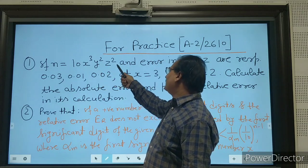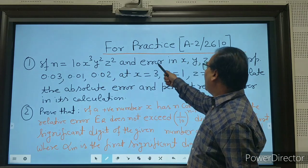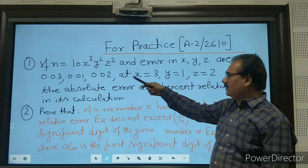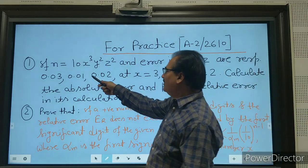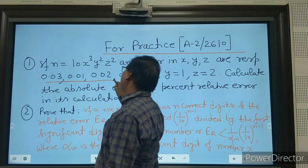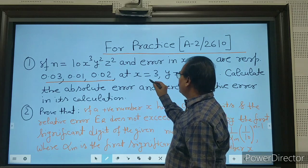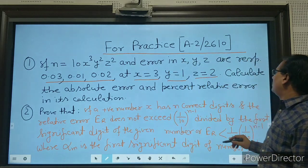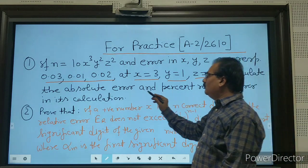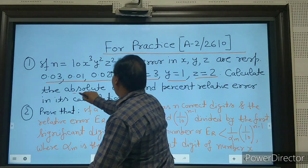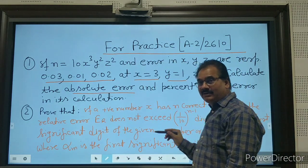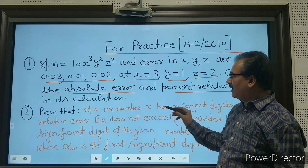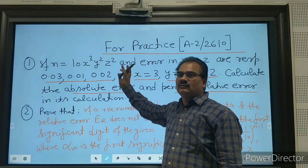For practice: if u = 10x³y²z², and the errors in x, y, z are respectively 0.03, 0.01, and 0.02, at x = 3, y = 1, and z = 2, calculate the absolute error and the percentage relative error in u.